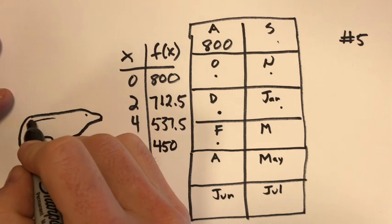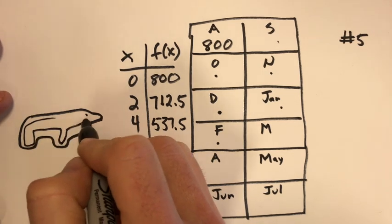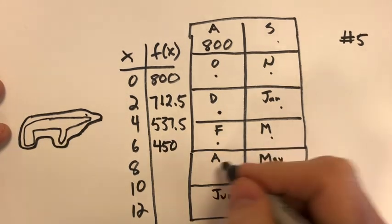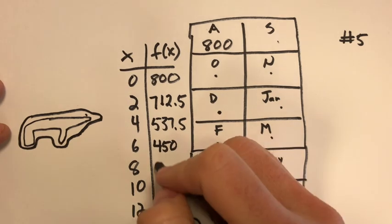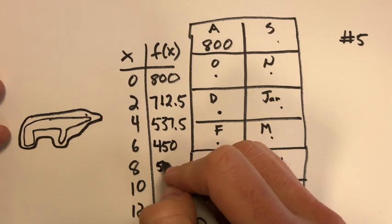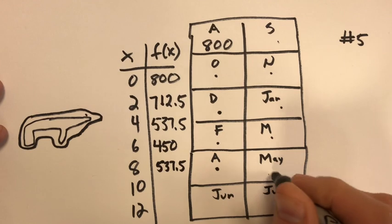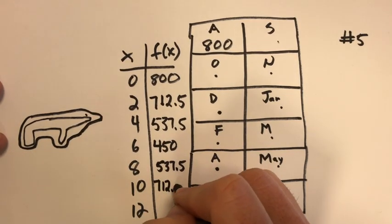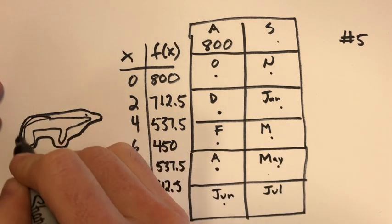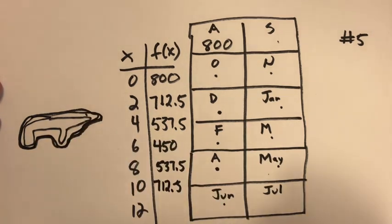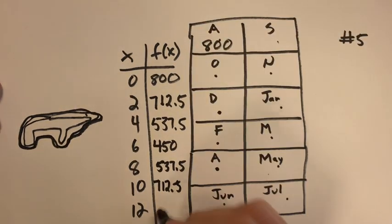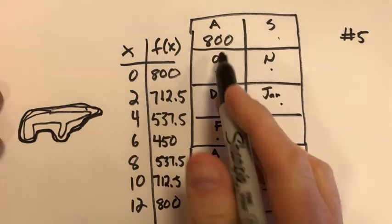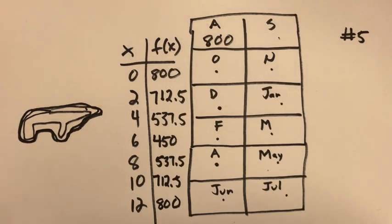Then two more months, March, April, now we're back up, we're out of our hibernation, we're starting to feed again. Two more months, May, June, and we're back up to 712, getting up to our, you know, back filling out most of our weight again, getting into the summer months. And then July and back to August, back up to our normal 800. So again, x is time in months and f(x) is the weight of the polar bear.